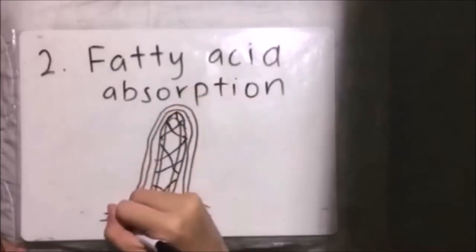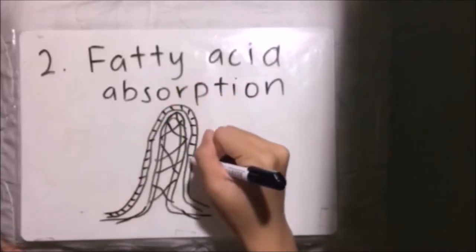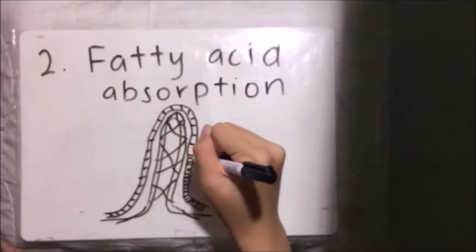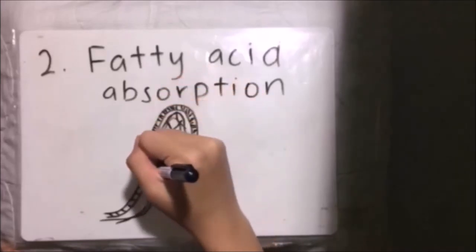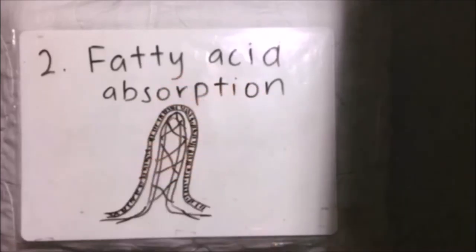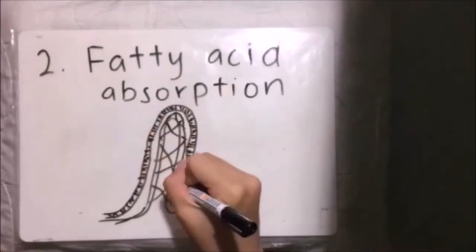The newly formed chylomicrons leave the epithelial cell and enter the lymphatic capillaries which are called lacteals. The lacteals are found in the finger-like projections of the intestinal wall called the villi. The lacteals represent another unique way fats are absorbed because lipids pass through the lymphatic system before they make their way back to your bloodstream.